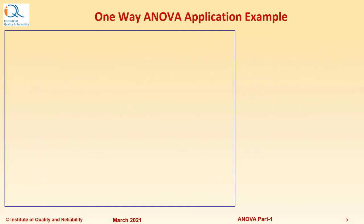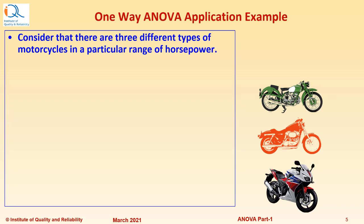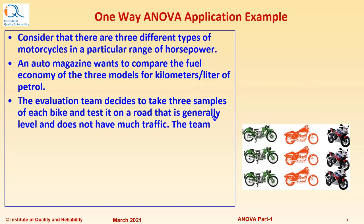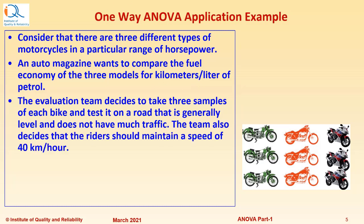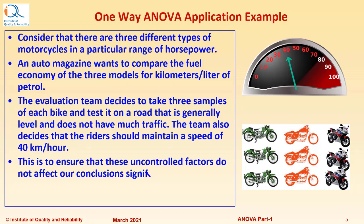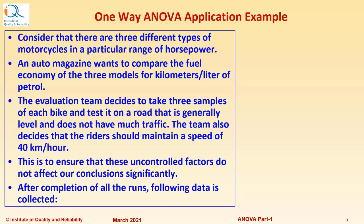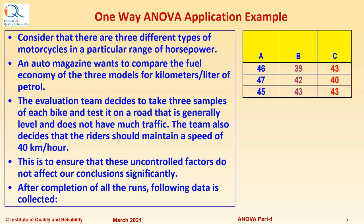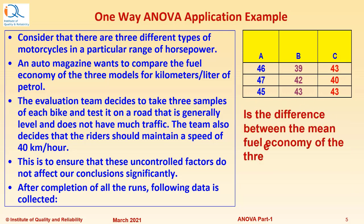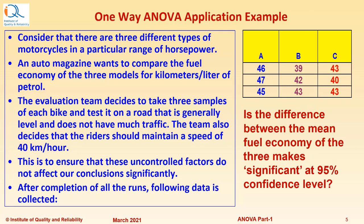Let us understand concepts of one-way analysis of variance with an application example. Consider three different types of motorcycles in a particular range of horsepower. An auto company wants to compare the fuel economy of the three models in kilometers per liter of petrol. The evaluation team takes three samples of each bike and tests it on a road that is generally level and does not have much traffic. The team also decides that a rider should maintain a speed of 40 km per hour to ensure that uncontrolled factors do not affect conclusions significantly. Following data is collected for the three motorcycle models and three samples each for kilometers per liter of petrol. Is the difference between the mean fuel economy of the three makes significant at 95% confidence level?